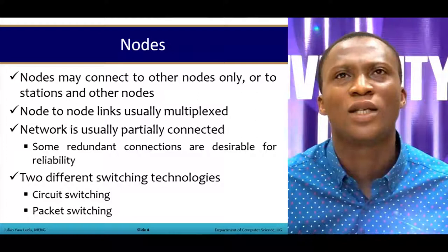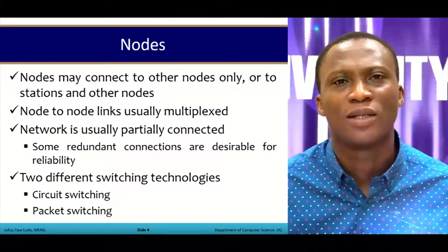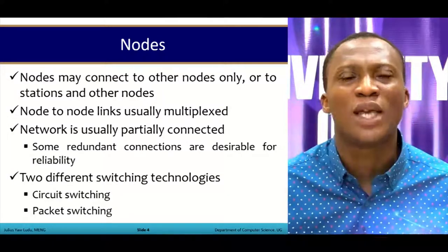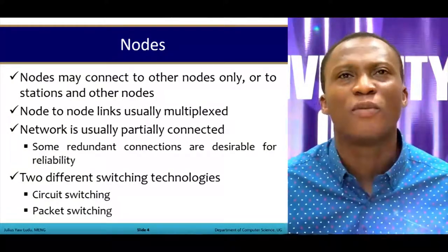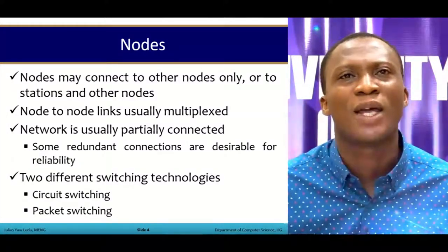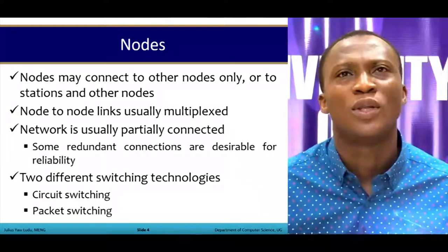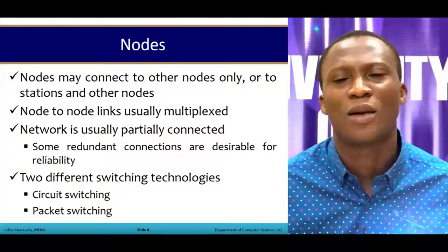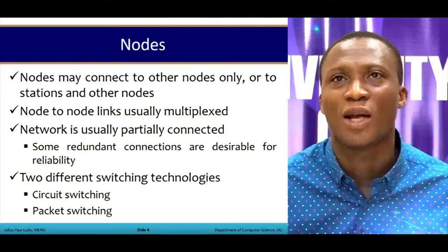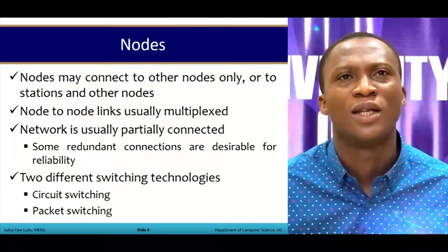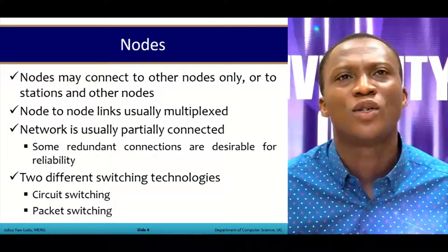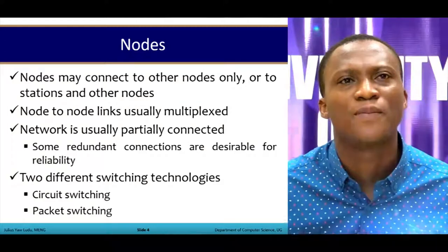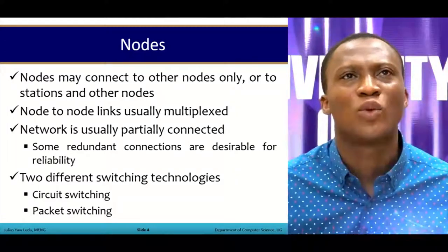Node-to-node links are usually multiplexed — we can take frames from different groups, put them together, and pass them through the channel. Networks are usually partially connected, and some redundant connections are desirable for reliability. There are two basic switching technologies: circuit switching and packet switching.